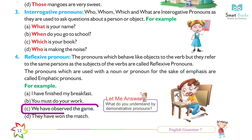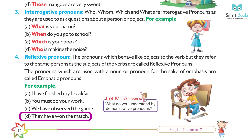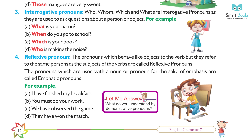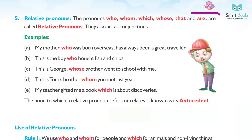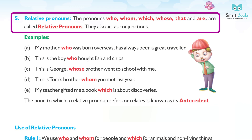(c) We have observed the game. (d) They have won the match. Five: Relative pronouns. The pronouns who, whom, which, whose, and that are called relative pronouns. They also act as conjunctions.